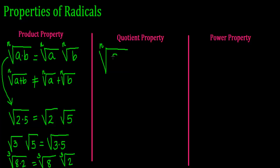of a quotient, which means a fraction, it is equivalent to having the quotient of the roots. That means I can separate the numerator from the denominator and place it inside its own radical.